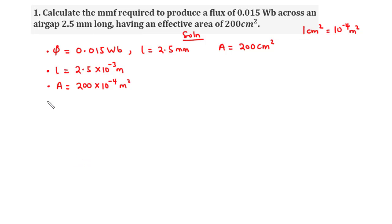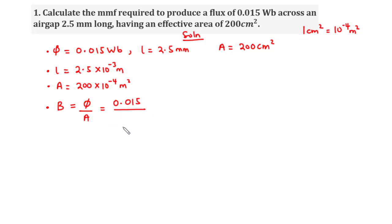Now let's find the MMF. We have the magnetic flux, the length of the air gap, and the cross-sectional area. We can first find the magnetic flux density B, which equals the magnetic flux divided by the effective area: B = 0.015 divided by 200 times 10 exponent negative 4, which gives 0.75 Tesla.